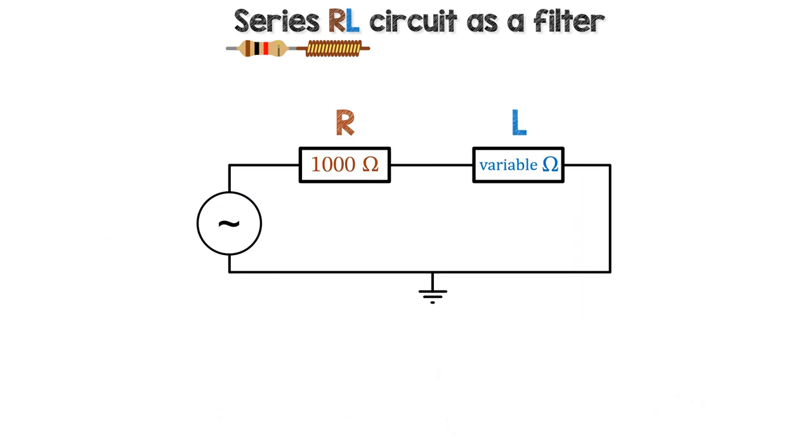A series RL circuit can be used as a passive low pass or a passive high pass filter. Passive filters do not boost or amplify the output signal.